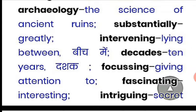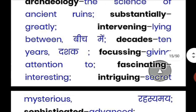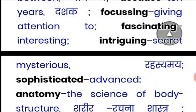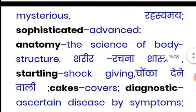'Decades' means a group of ten years. 'Focusing' means giving attention to something. 'Fascinating' means interesting and alluring — something that attracts you. 'Intriguing' means full of mystery. 'Sophisticated' means advanced. 'Anatomy' is the science of body structure.